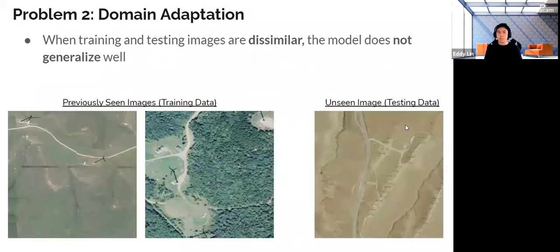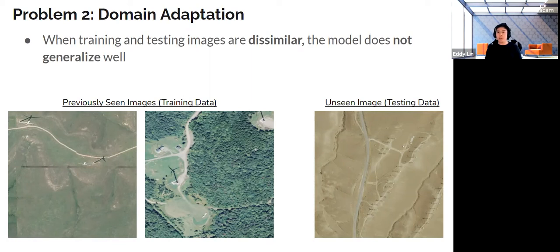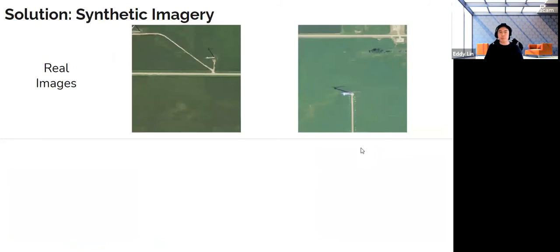The second more interesting problem is that these deep learning models don't generalize very well yet. In other words, if I feed it a bunch of training images that look very green like forests or grasslands, the model will learn to do well in that kind of data. But on data from a new region with a more desert-like geography, the deep learning model is just not going to do as well, especially if the wind turbines are now smaller, as you can see.